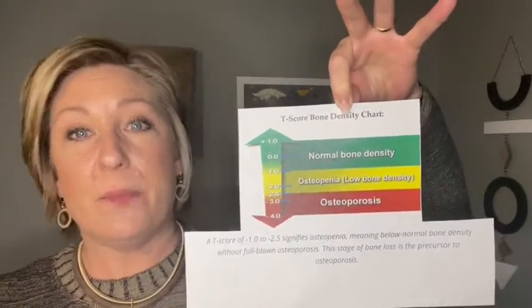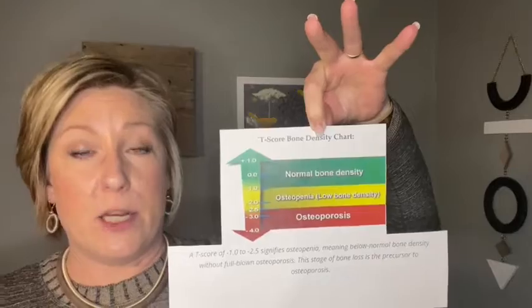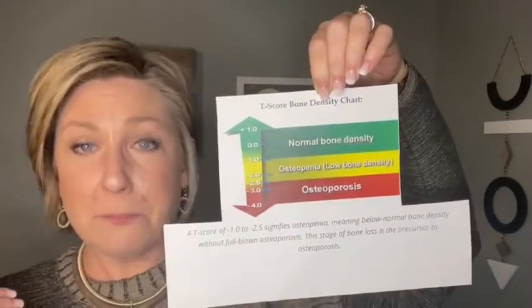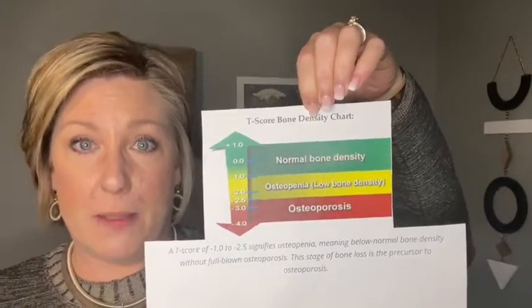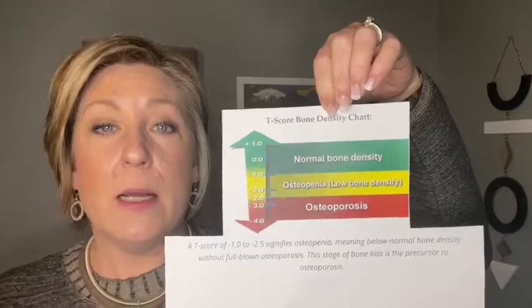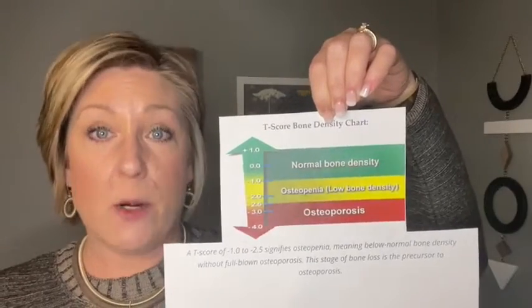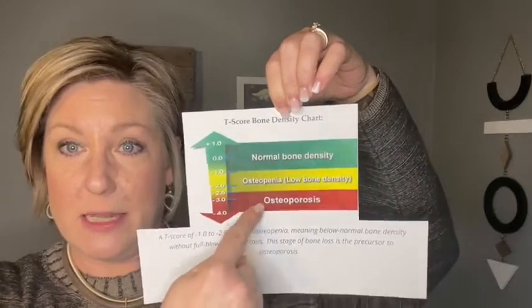Negative one to negative 2.5 is considered osteopenia — you have low bone mass, but you're not technically in the osteoporosis range. It's your warning sign, and if something isn't done, you will continue to lose bone mass and eventually reach osteoporosis. Those T-scores roughly correlate to about 10% to 25% bone loss. A T-score of negative 2.5 or lower — 25% or more bone loss — is diagnosed as osteoporosis. Those bones become very weak and brittle, and the risk of fracture in weight-bearing joints becomes a real concern.